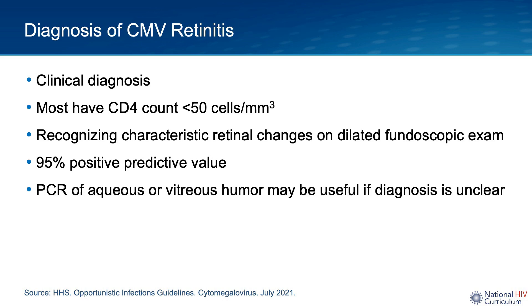The diagnosis of CMV is based on the clinical presentation. Most of these patients have a low CD4 count, usually less than 50, but it can also be seen in individuals with T-cell counts less than 100. CMV retinitis is typically diagnosed by an experienced ophthalmologist performing a dilated fundoscopic exam and finding characteristic retinal changes. This type of ophthalmologic diagnosis has a 95% positive predictive value. The differential diagnosis for retinitis in people with HIV includes herpes simplex virus, varicella zoster virus, and toxoplasma gondii.